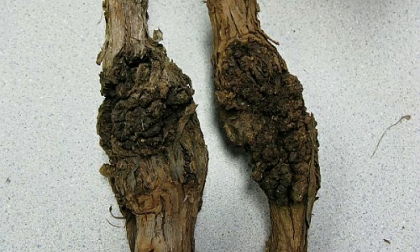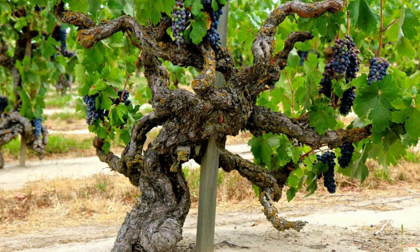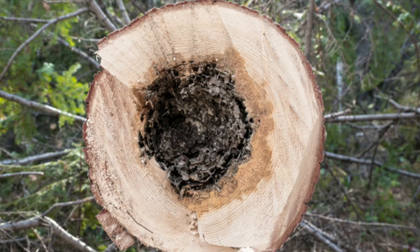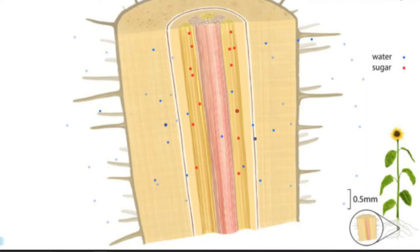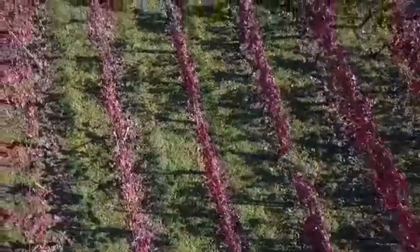Number seven is Grapevine Trunk Disease, also known as GTD. It is very destructive — it reduces the lifespan of the vineyard and increases the cost of grapes, because the vines die faster. Normal vine lifespan is about 30 years, although some vines live for 100 years or more. GTD is caused by a fungus that grows through the wood, blocking both the xylem and phloem. Since xylem transports water and phloem transports sugar, blocking both stops all growth and the vine slowly dies.